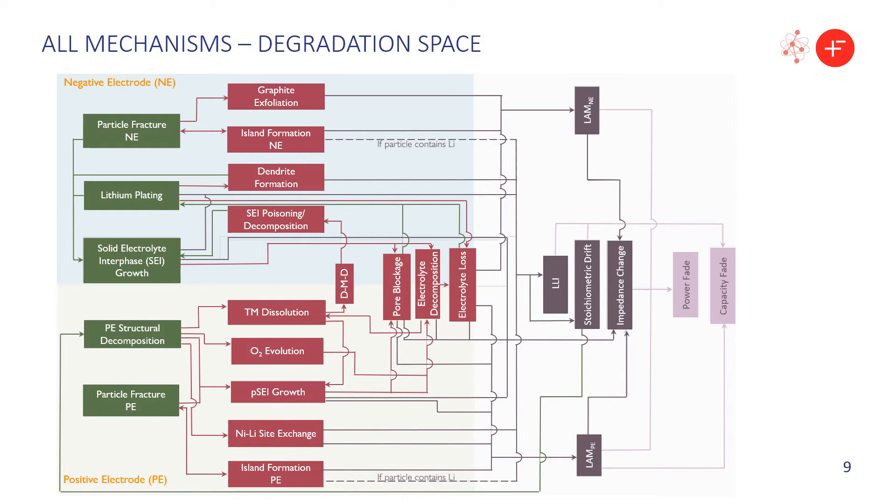To capture the interdependencies, we devised this flowchart, which shows how the primary mechanisms lead to the secondary mechanisms and feed into the modes to produce the effects. This is essentially a map of degradation space.